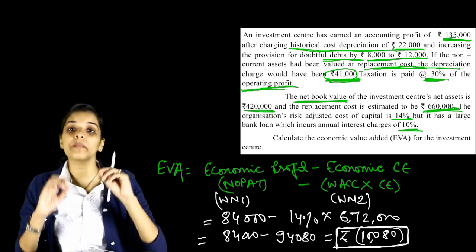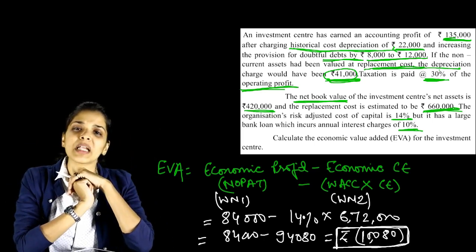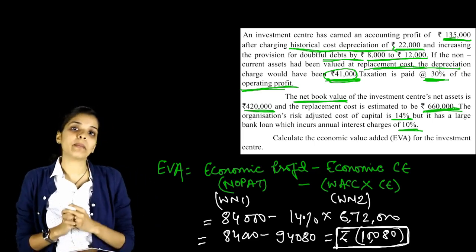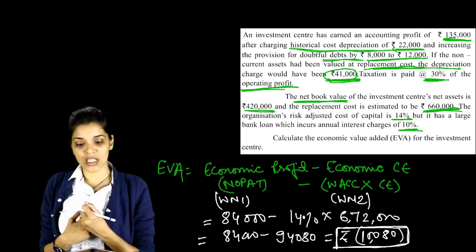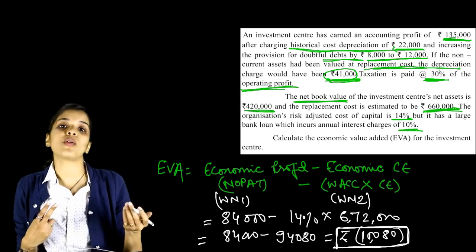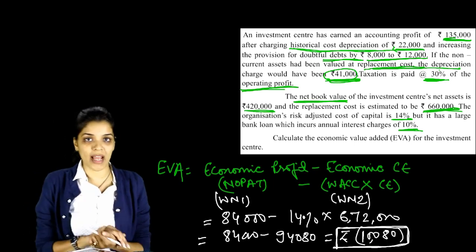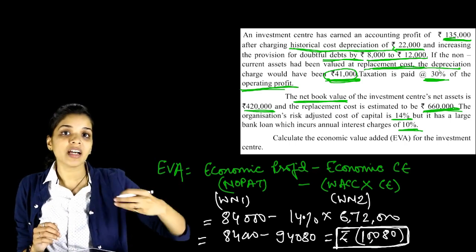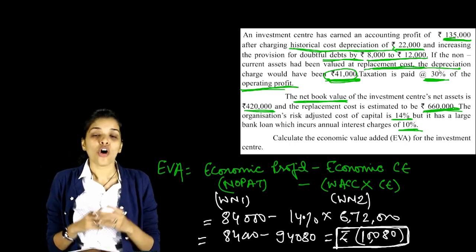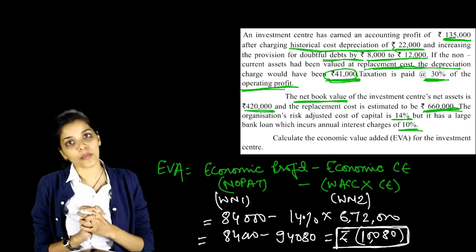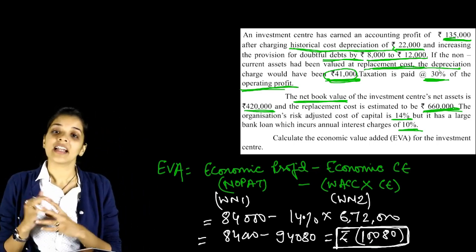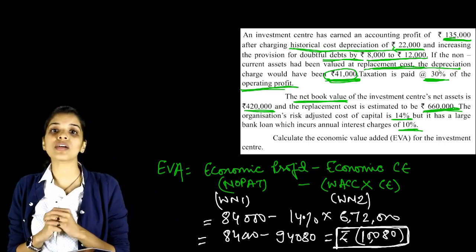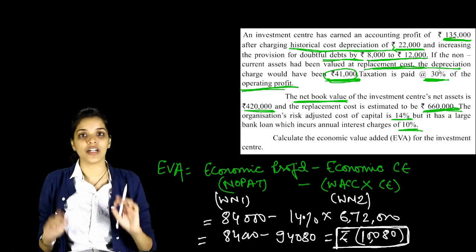This was a question on EVA where EVA came out negative. EVA negative is not acceptable — it means performance is not good. EVA should always be positive to be better. This question covered provision adjustments and depreciation — how to add back accounting depreciation and minus economic depreciation, how to add back the increase in provision to profit and add the closing provision figure to capital employed, and why interest effect was not taken since interest was not given. In the next question, we will take the effect of both interest and tax. If you have any doubt, please feel free to ask. Bye-bye.